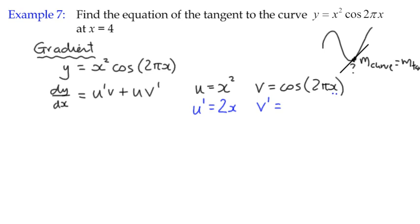So we've got an inside function and we've got an outside function. So our normal rule is differentiate the outside function. Cos of anything becomes negative sine of that same expression, negative sine of 2πx.